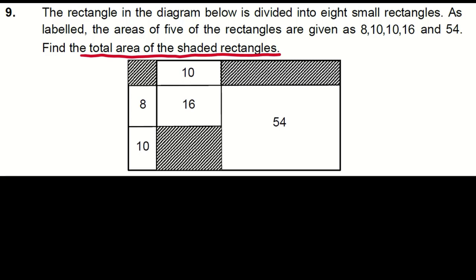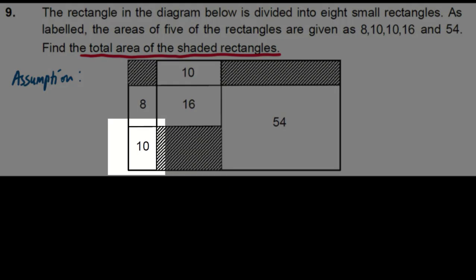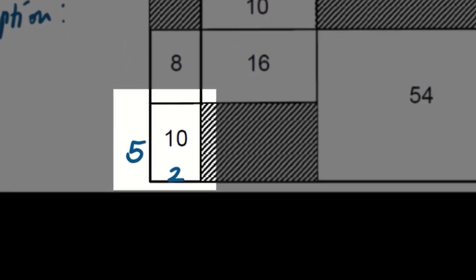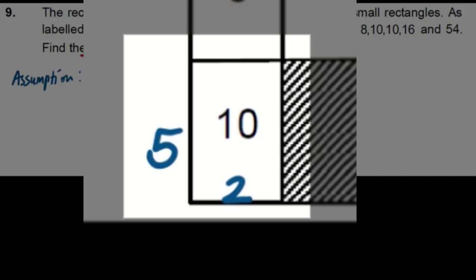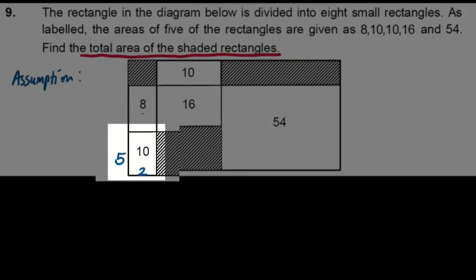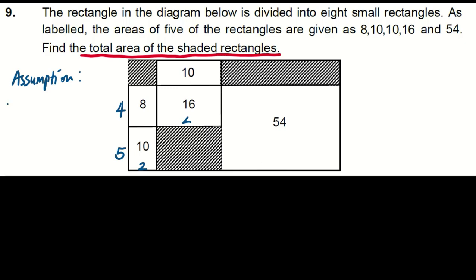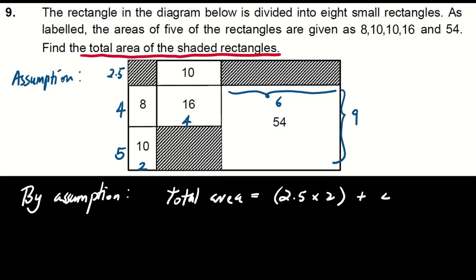First method is with assumption. Let's look at a rectangle with an area of 10. Since 10 can be made by multiplying 2 and 5, we guessed that this rectangle size is 2 by 5. With this guess, we can figure out the size of the other rectangles. After doing this, we find that the total area is 2.5 times 2 plus 4 times 5 plus 6 times 2.5, which equals 40.